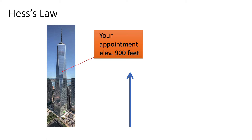You might say: I want to go up to the top story and do some sightseeing. So you could go from the ground floor all the way up to the top floor, look around Manhattan from a very high elevation, then take the elevator down. In either of these cases, you end up at 900 feet.